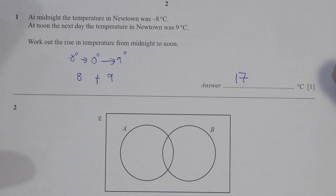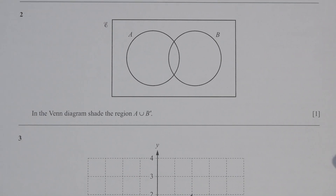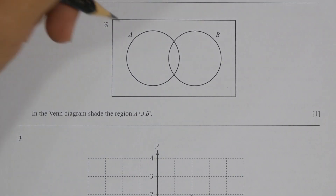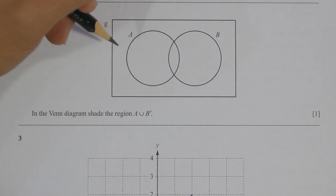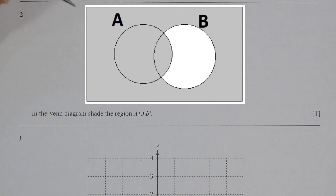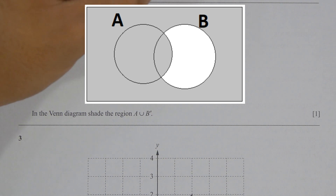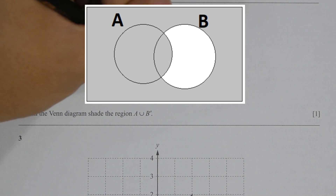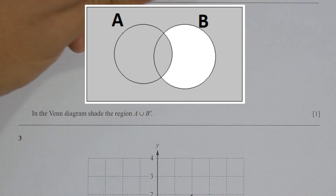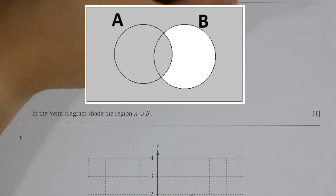For question 2, I actually made a mistake. The area between A and B is also included because the question specifies A union with everything other than B. These are the things to take note of.